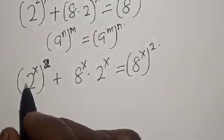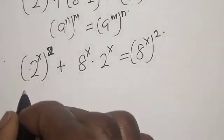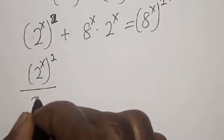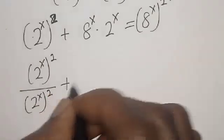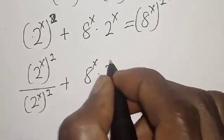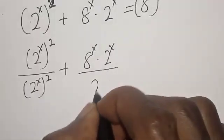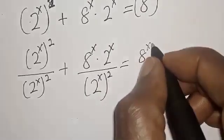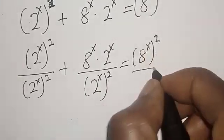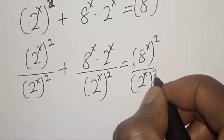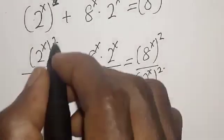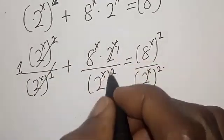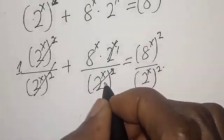Divide both sides by 2 raised to power s squared. We get: 1 plus 8 raised to power x multiplied by 2 raised to power s, divided by 2 raised to power s squared, is equal to 8 raised to power s squared divided by 2 raised to power s squared. We cancel terms, giving 1 and 2 raised to power x.